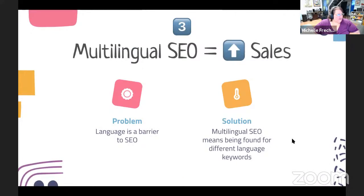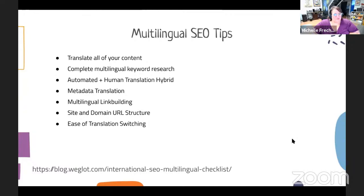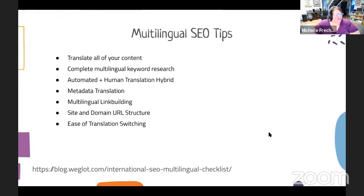SEO will also increase sales — if people are searching for something and it's on your website and the language matches, you'll have a much higher opportunity to sell to those people. You can do multilingual keyword research, have that automated machine-and-human translation hybrid, and make sure all the words are perfect. Site domain structure like we talked about earlier, and ease of language switching — all I had to do was push a button and the language switched to the one I wanted to read.